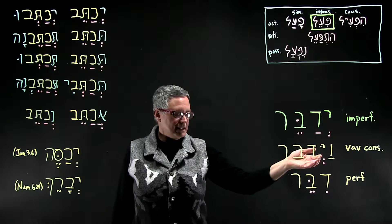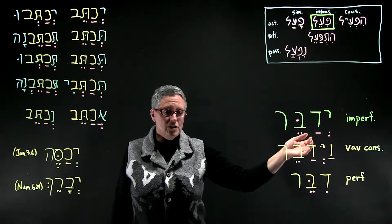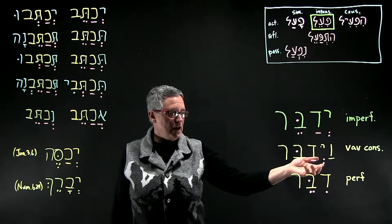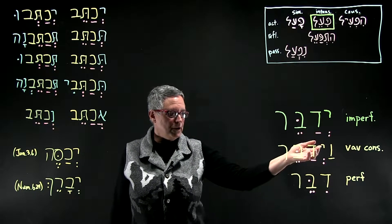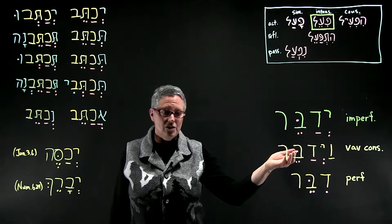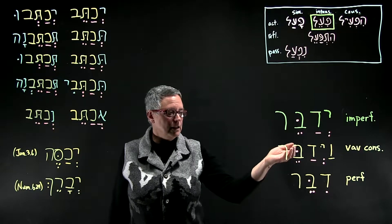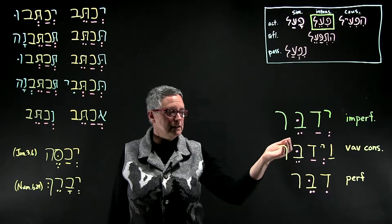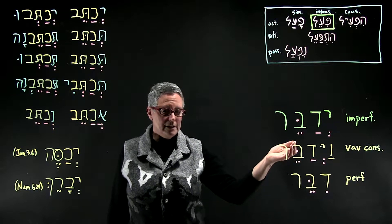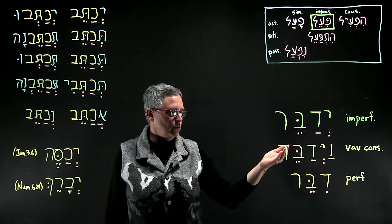In the vav consecutive, you still see the shva under the prefix, and you still see the dimerol — the dagesh in the middle root letter.